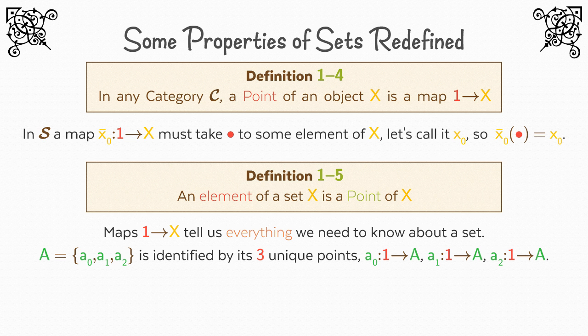So we've been informally speaking of a set a as being equal to a₀, a₁, a₂, and this was a necessary simplification which we will still use in discussion, but you will shortly see the benefits of using the more formal way in proofs, which is to describe the set a by its three unique points: a₀: 1 to a, a₁: 1 to a, and a₂: 1 to a.